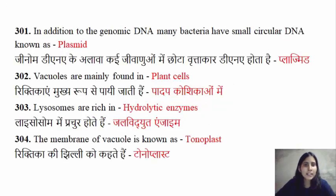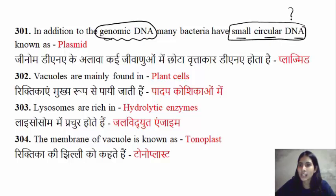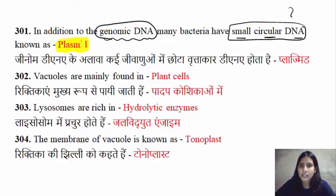First, in addition to genomic DNA, the normal genome which is in bacteria, it can also be found in a small circular DNA. In bacteria, you need to know the name of the small circular DNA. The name is Plasmid.